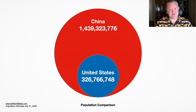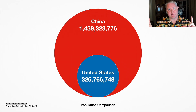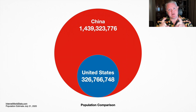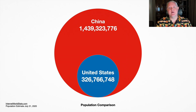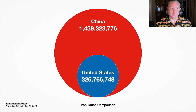Here you can see the difference between the population of China, which is the really large red circle, and the population of the United States, which is a smaller blue circle. And you can instantly see this big difference between a really large population and the really small population.